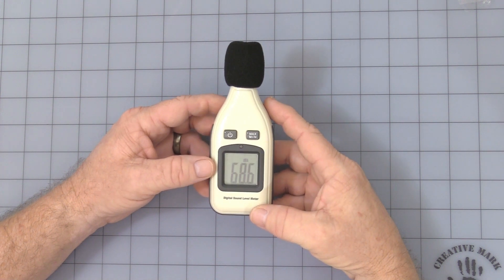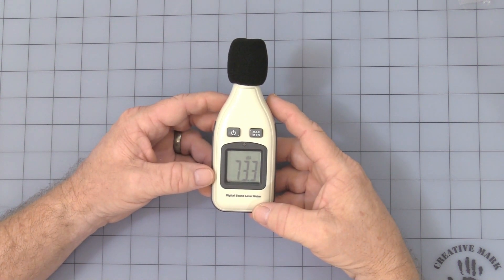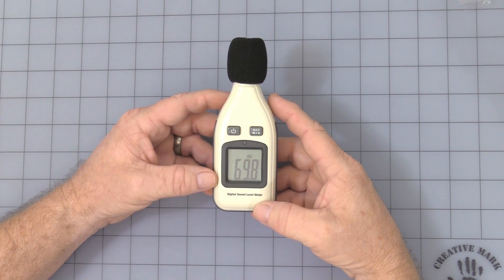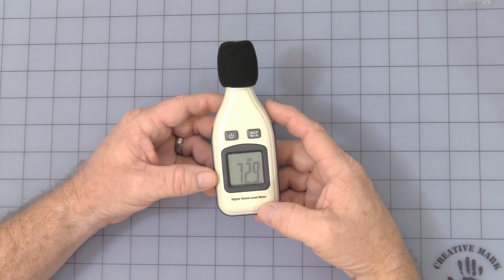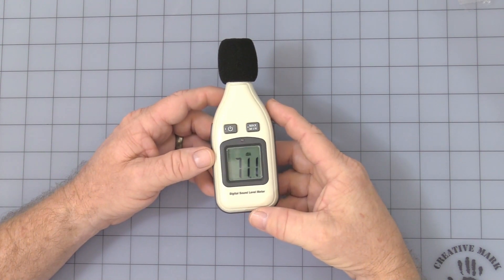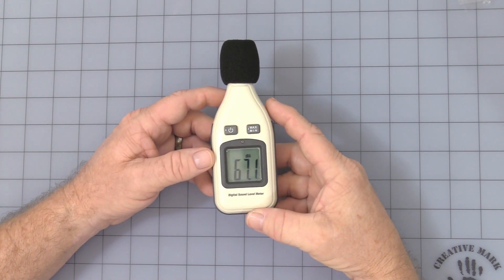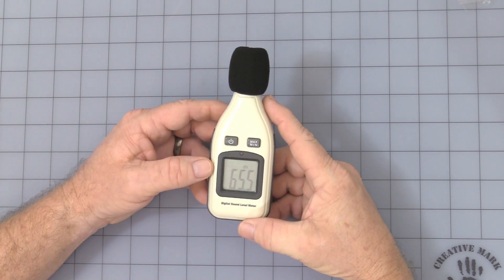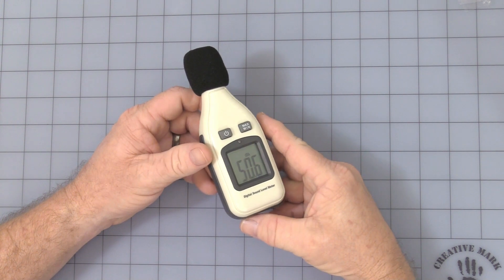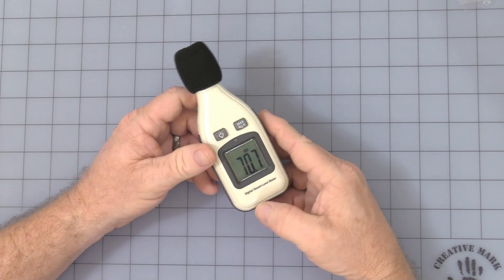It has a four-digit LCD display. The range is from 30 to 130 decibels. Resolution is 0.1 decibel. Accuracy is plus or minus one and a half decibel. Frequency range is from 32 Hertz to 8 kilohertz with a two-second sample rate. And operating temperature is zero to 40 degrees Celsius.